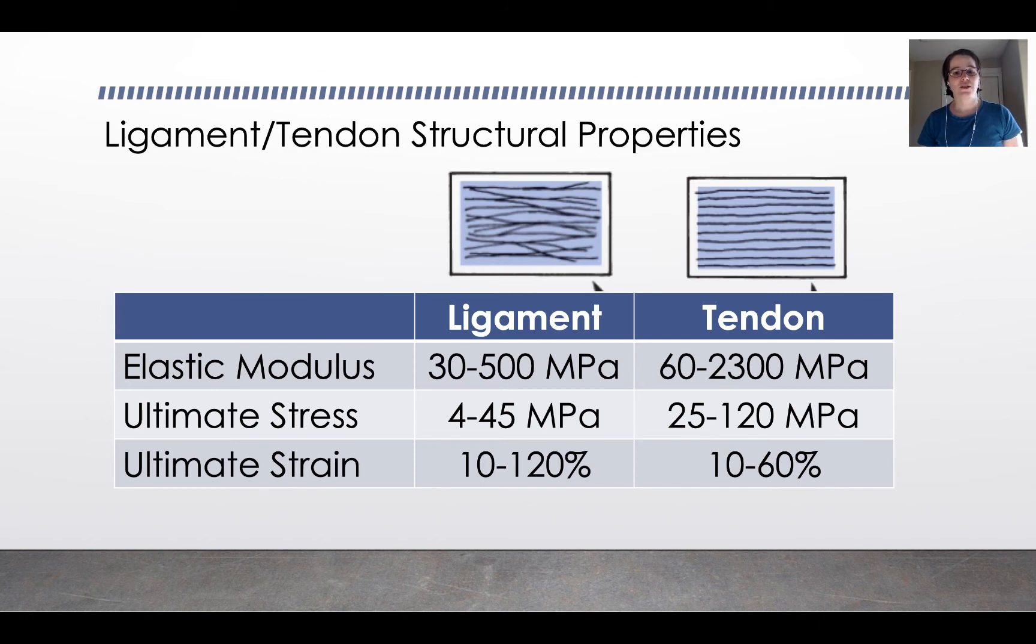They also have slightly different structural properties. If you test both ligament and tendon, you'll find that ligament has an elastic modulus in the range from 300 to 500 megapascals, whereas tendon ranges from 60 to 2300 megapascals. And that larger modulus for tendon reflects that tendon experiences greater loads than ligament. Likewise, tendon has a higher ultimate stress, but it does experience less ultimate strain than ligament, probably because the muscle that tendon is attached to can also take up some of the stretch that's associated with the strain.